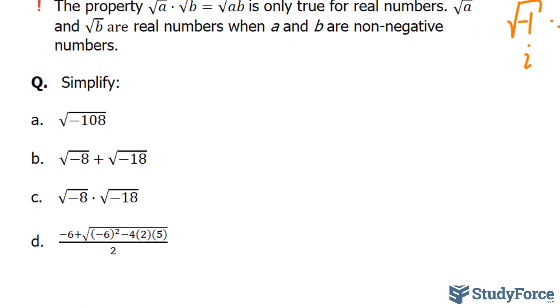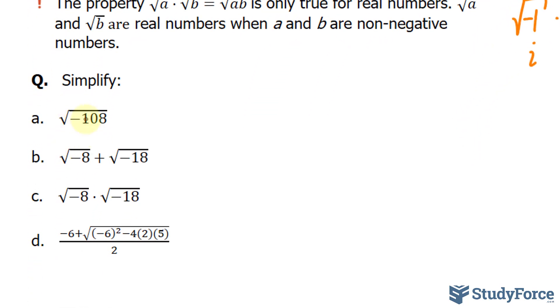Let's do some examples. Simplify the square root of negative 108. So the very first thing that I'll do is write this down as the square root of negative 1 times the square root of 108. As mentioned earlier, this factor will be written as i, and we have to find the square root of 108. It's not a perfect square, but we can break it down so that it does become one.